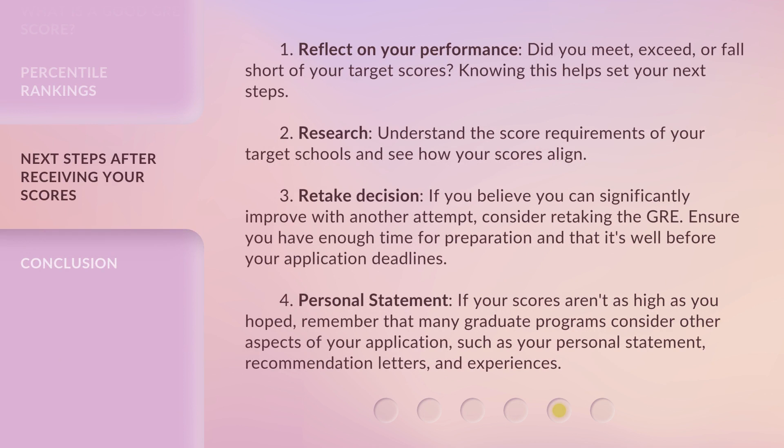Here are your next steps. First, reflect on your performance — did you meet, exceed, or fall short of your target scores? Knowing this helps set your next steps. Second, research: understand the score requirements of your target schools and see how your scores align. Third, make a retake decision — if you believe you can significantly improve with another attempt, consider retaking the GRE, ensuring you have enough time for preparation and that it's well before your application deadlines. Fourth, work on your personal statement — if your scores aren't as high as you hoped, remember that many graduate programs consider other aspects of your application, such as your personal statement, recommendation letters, and experiences.